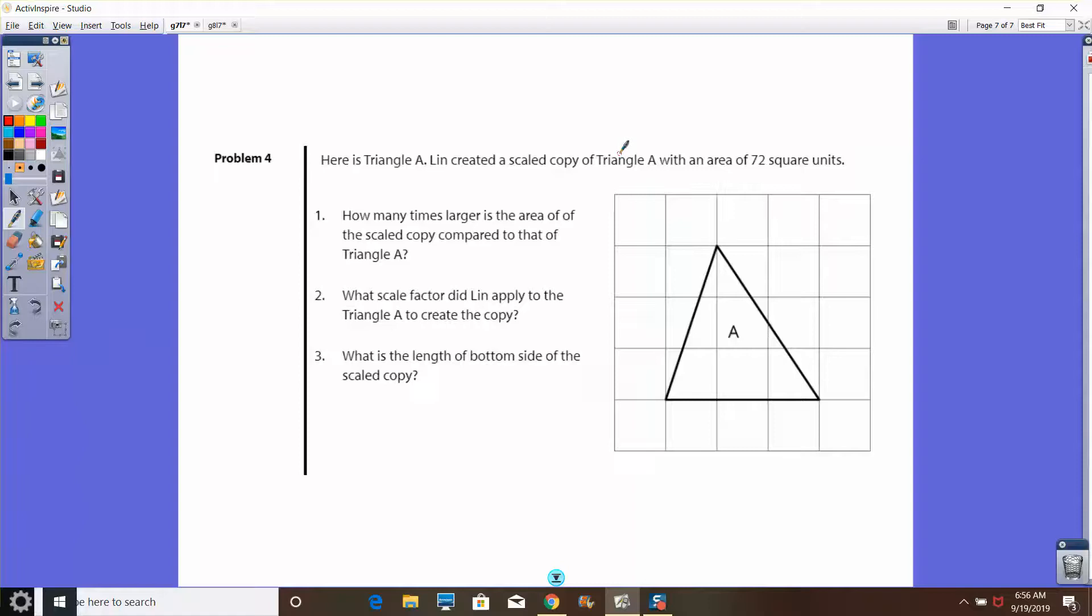And for the final problem, I want to point out that this particular problem is of a lesson that we did not necessarily spend time in class on. But because you've got this video here in front of you, I'm going to show you how to do this problem. In this question here, Lynn created a scale copy of triangle A that had an area of 72 square units. Question number one, how many times larger is the area of the scale copy compared to that of triangle A?